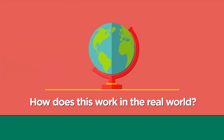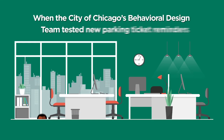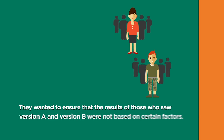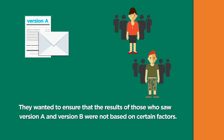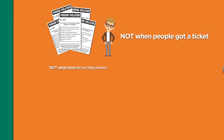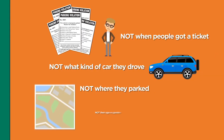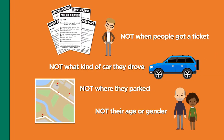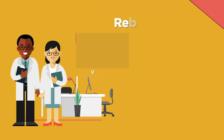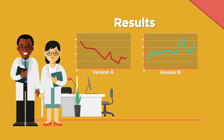How does this work in the real world? When the city of Chicago's behavioral design team tested new parking ticket reminders, they wanted to ensure that the results from people who saw version A or version B of the reminder were not based on other factors — like when people got a ticket, what kind of car they drove, where they parked, their age or gender — but was determined through randomization. That way, they could trust the results were because of the new reminder and not because of any other factors.